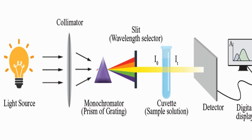This is the monochromator, prism or grating. It consists of entrance slit and exit slit. This is a cuvette in which we keep the sample solution. This is detector. And this is a digital display.